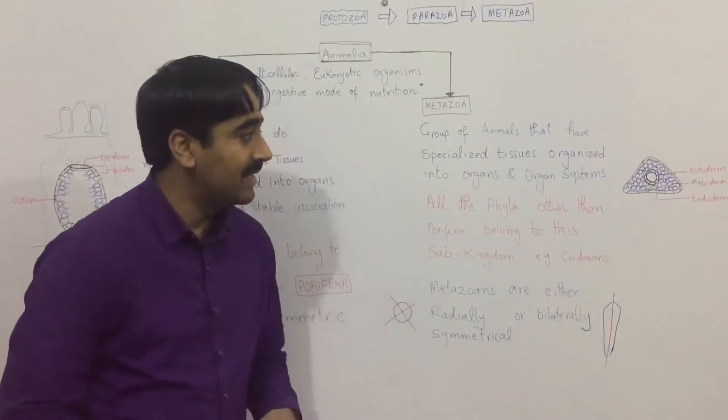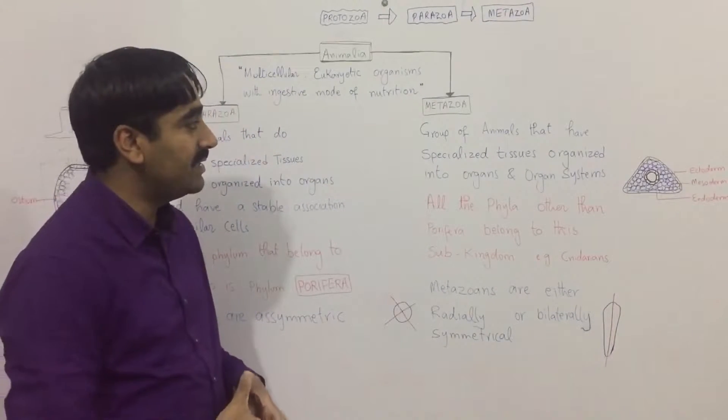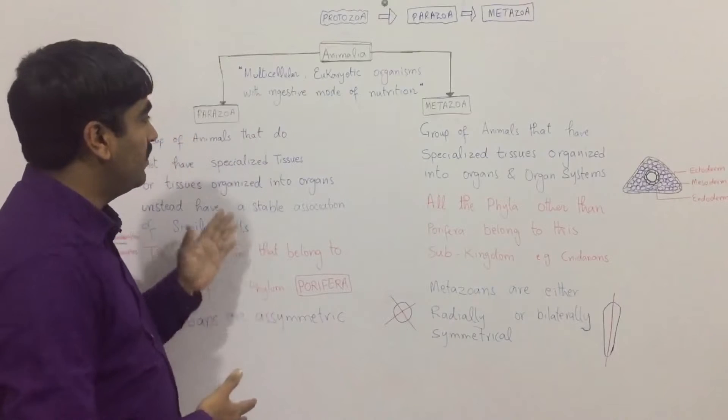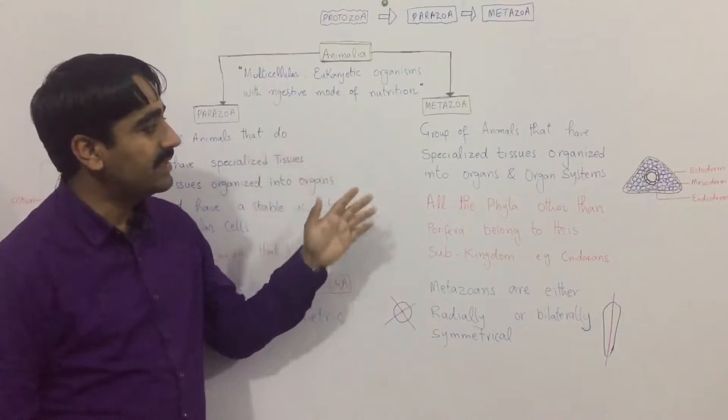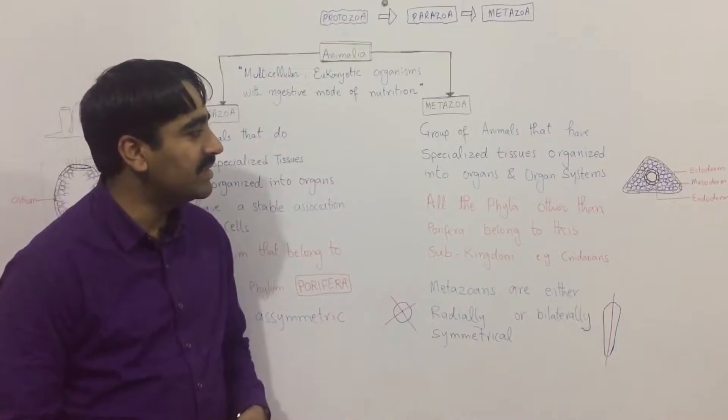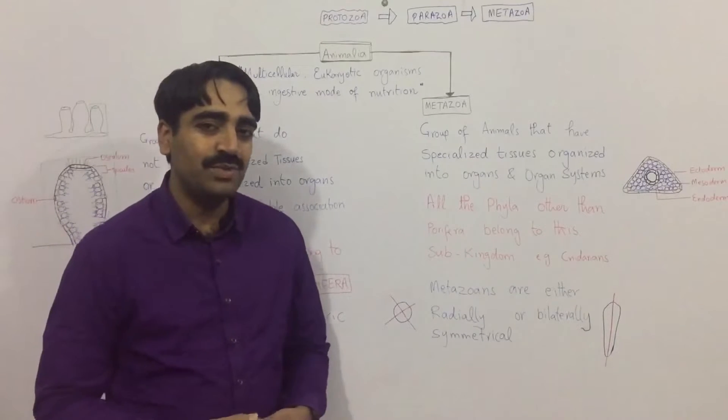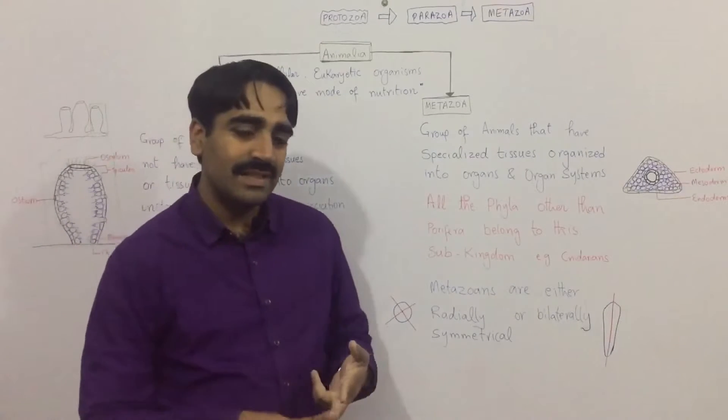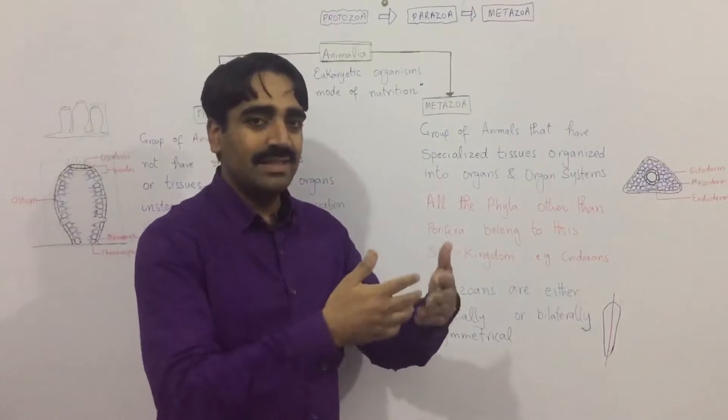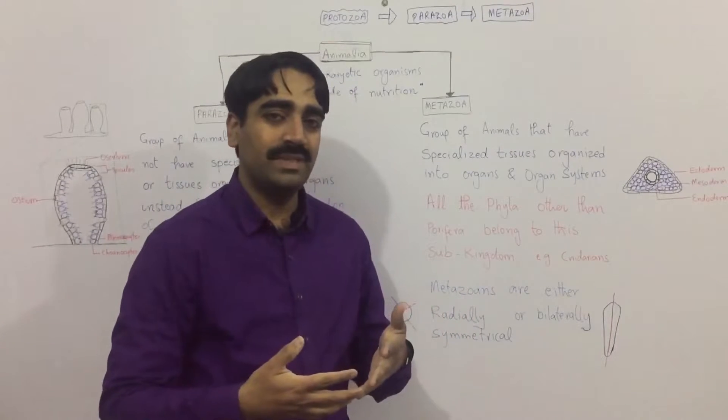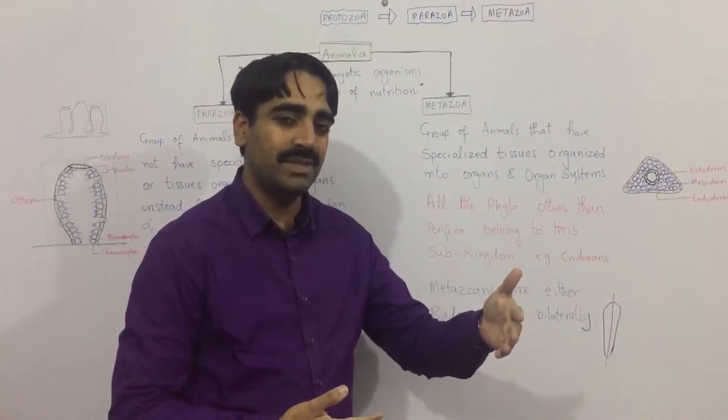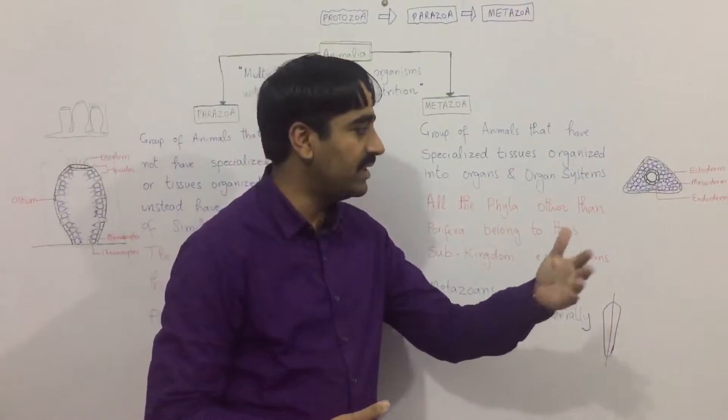The second group, which is considered to have evolved from the parazoa, is the metazoa. This is the group of animals that have specialized tissue, specialized organs, and systems, as it gives rise to higher and higher animals or the cortex, eventually the chordates.